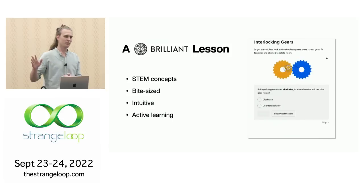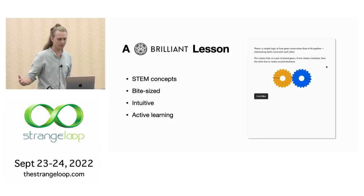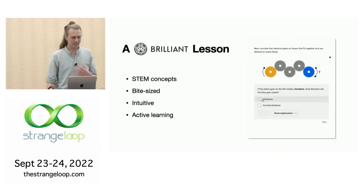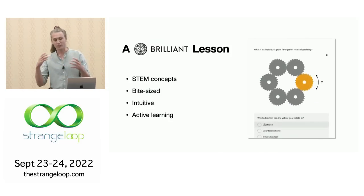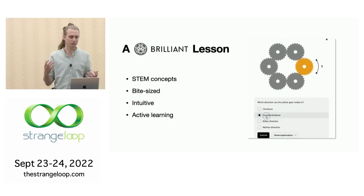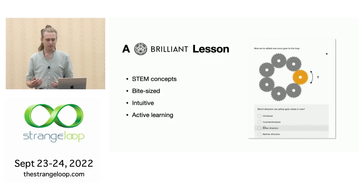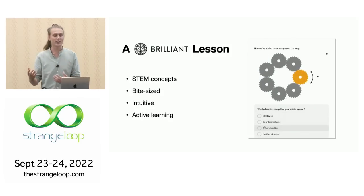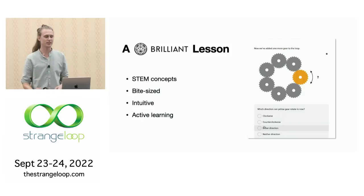Brilliant is a company that makes online STEM lessons that teach concepts in science, technology, engineering, and math. These lessons are bite-sized. You can do them on your phone. You can learn some new concept in just five minutes. And the explanations are intuitive. We have great teachers who have worked hard to get the concepts across to you in a way that makes sense.